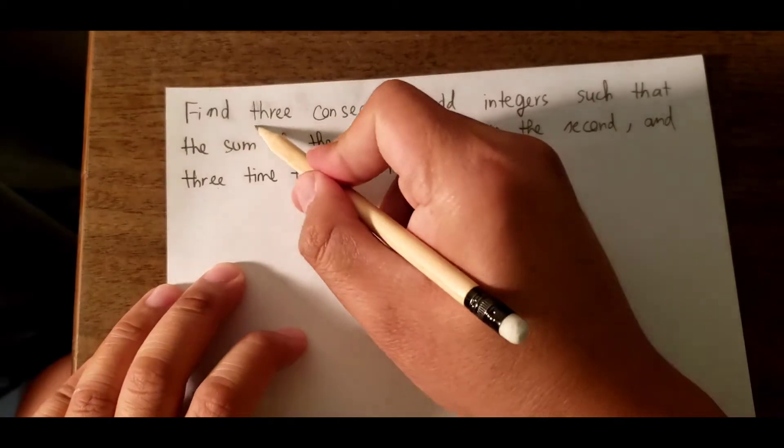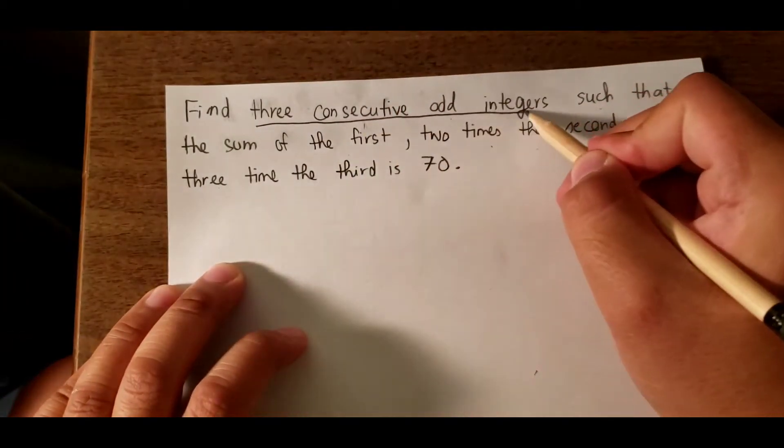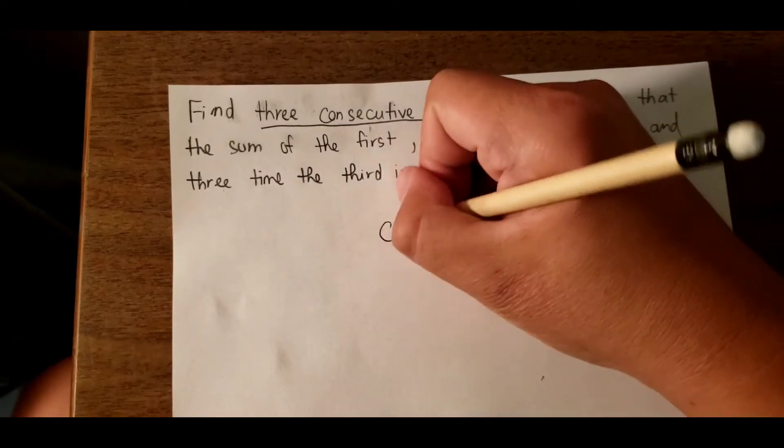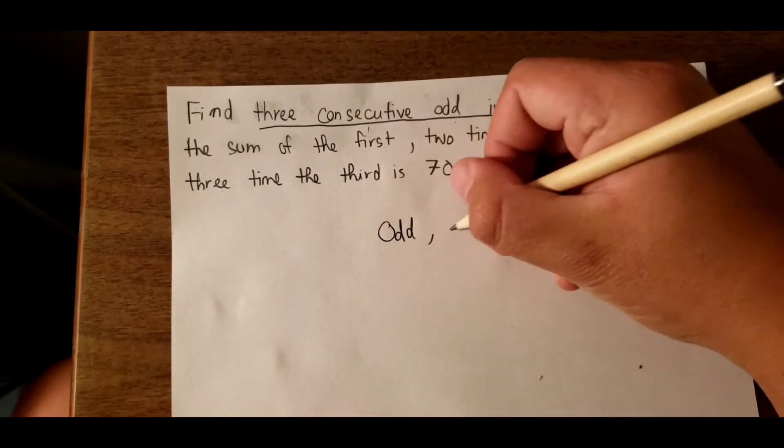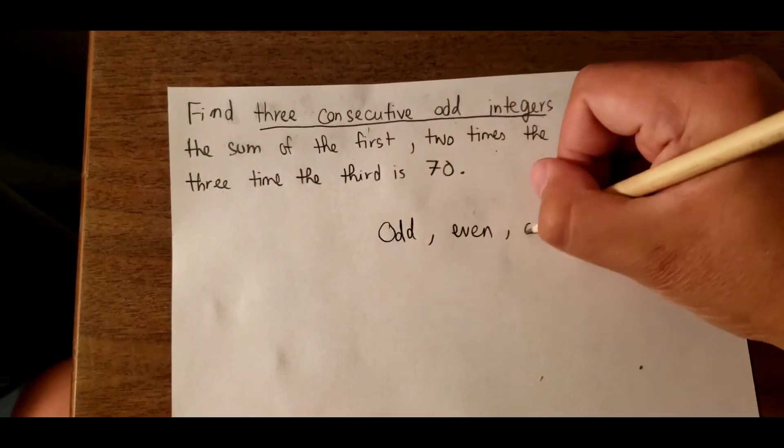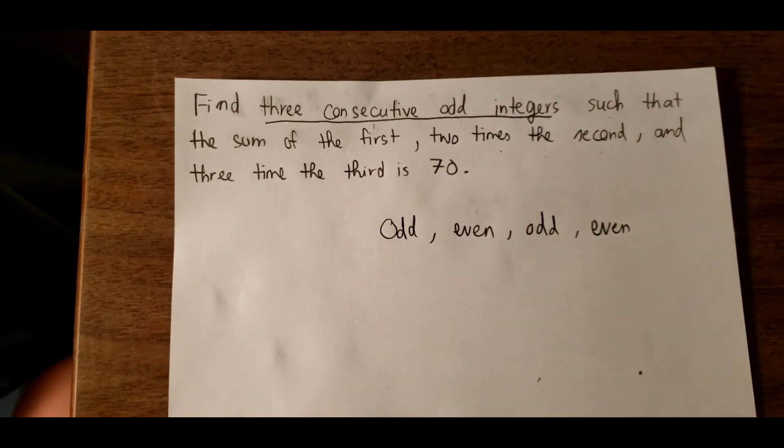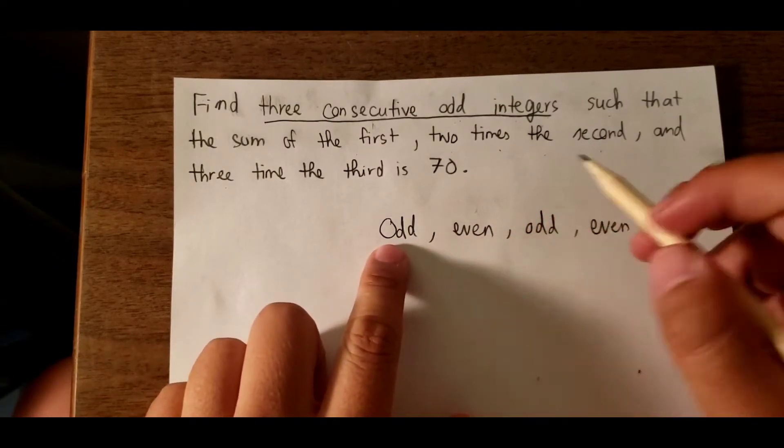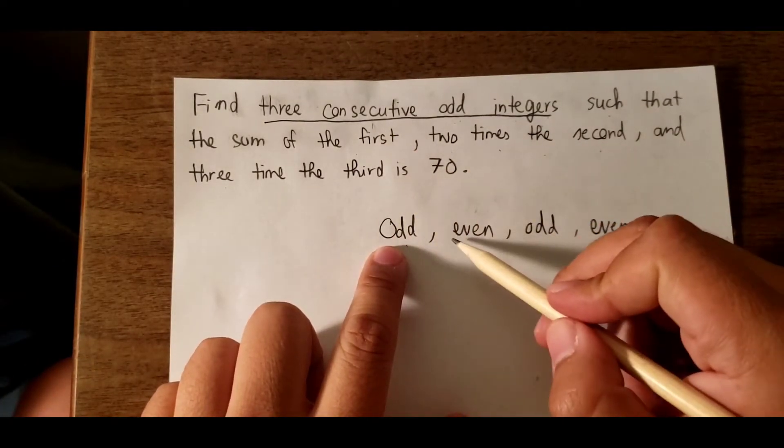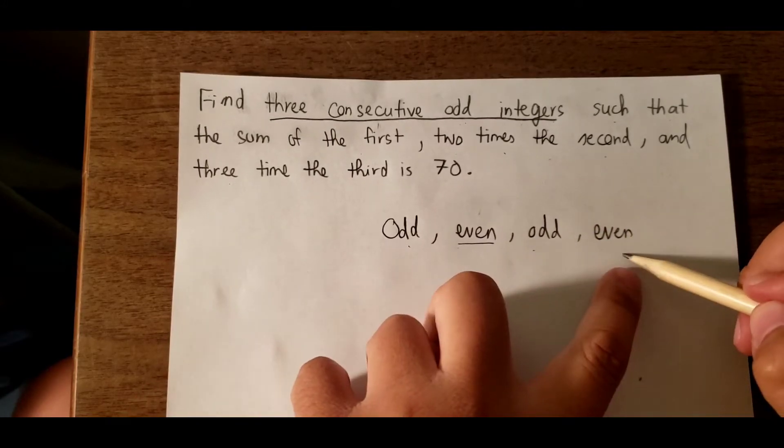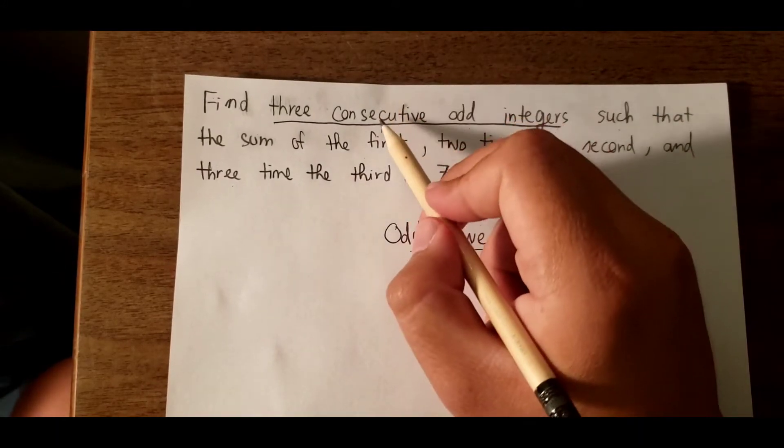So here we have information about three consecutive odd integers. We know that odd, even, odd, even - every time the odd alternates with even, then goes back to odd, then back to even. So we have consecutive odd integers.